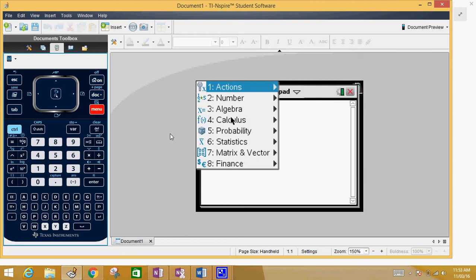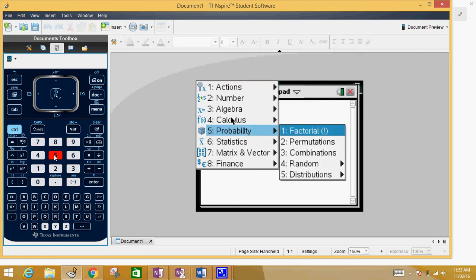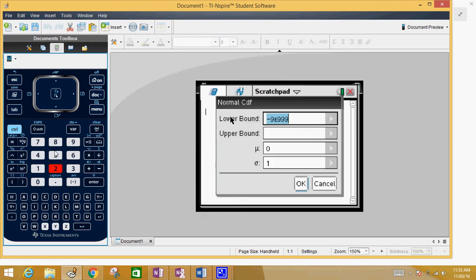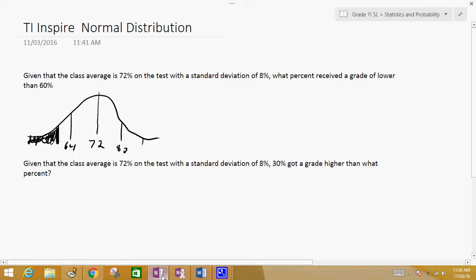This question we're looking at probability. I like to type the number 5 as opposed to going down. So number 5, and it's a normal distribution. For this one we're going to use the normal CDF, so number 2. It says lower bound, upper bound. This symbol is the mean and this symbol is the standard deviation. So if we go back to our question, our lower bound—if we're looking at the normal distribution it goes from negative infinity to positive infinity—so the lower bound would be negative infinity and they've already written it for you.